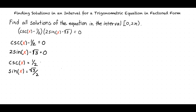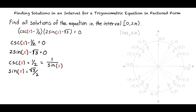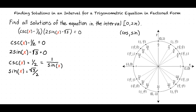Remember that cosecant of x is equal to 1 over sine x. It's also important to remember that on a unit circle, the x value corresponds to the cosine function at a certain radian value, and the y value corresponds to the sine function at a certain radian value. Looking at the unit circle, we will see that there are no values along the interval 0 to 2π that will make 1 over sine x equal to one-half.